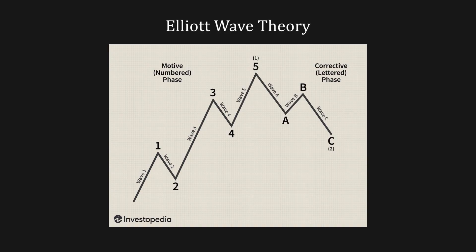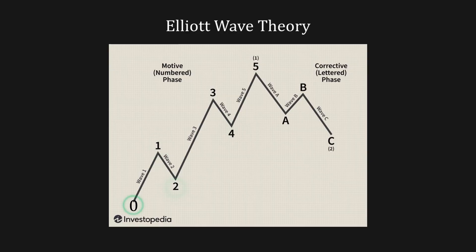The impulse waves consist of five waves with six points, while the corrective waves have three waves labeled ABC and four points.